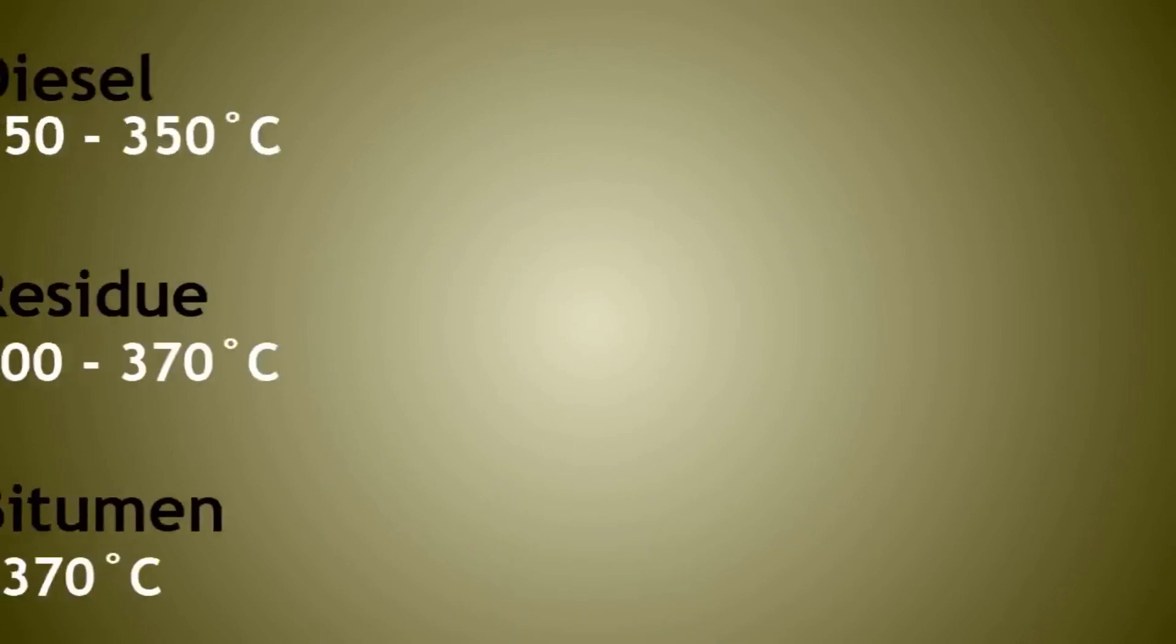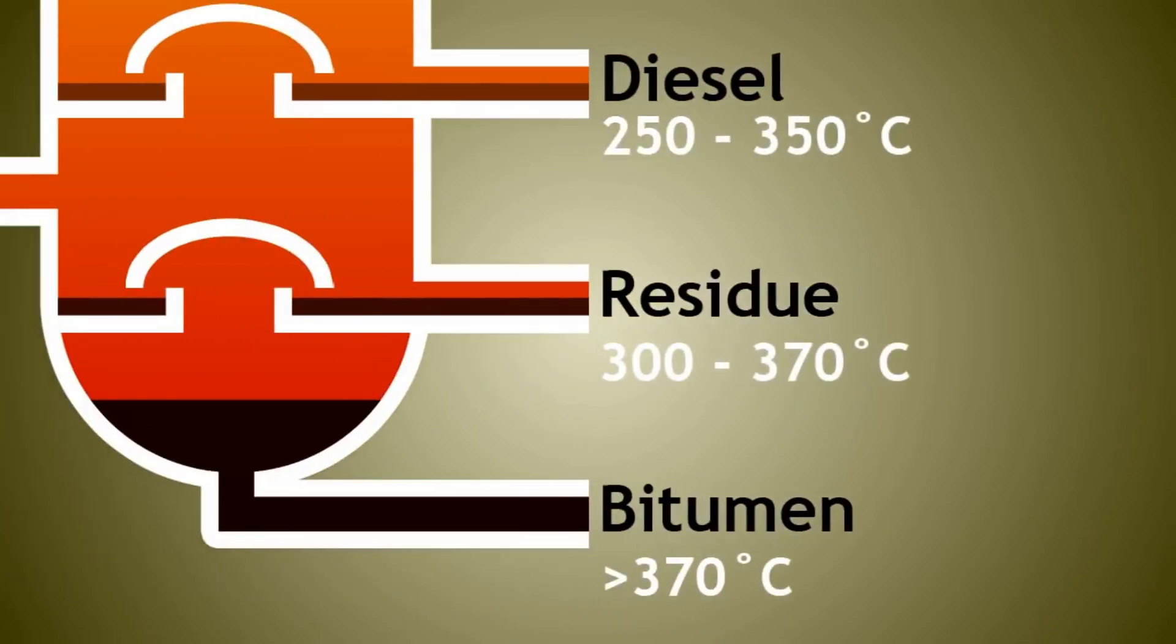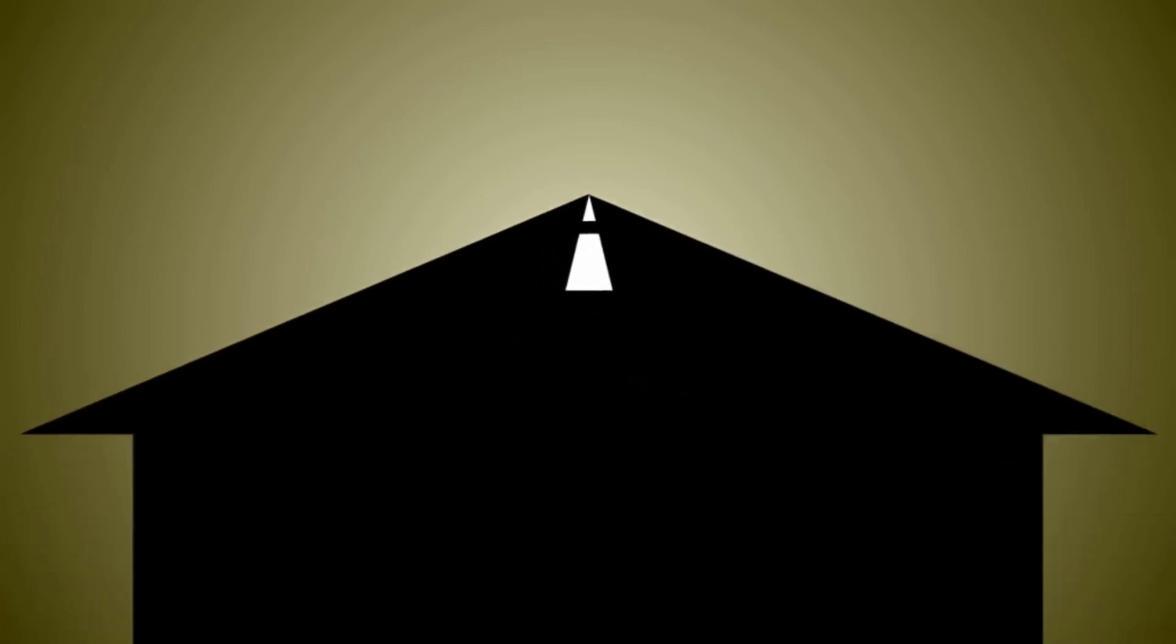The very bottom fraction is bitumen. This is a thick black adhesive used on roads, either as the surface finish or combined with stone chippings to create a solid, resistant material. It can also be used to cover roofs due to its waterproofing properties.